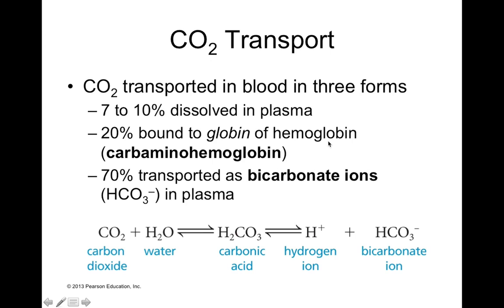20% of it is bound to hemoglobin. Hemoglobin can transport CO2, but CO2 binds in a different place — it actually binds to a different spot on hemoglobin. And 7% to 10% of it is also dissolved directly in blood plasma, so some of that gas can just dissolve straight into plasma and not be converted to carbonic acid. But you see the majority of it is transported as bicarbonate.